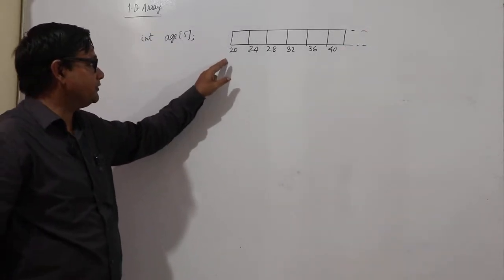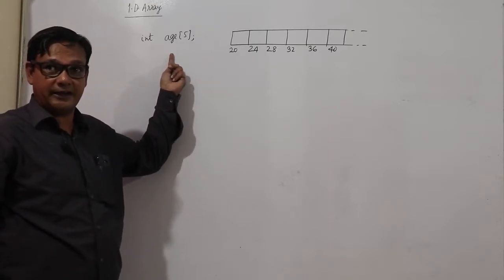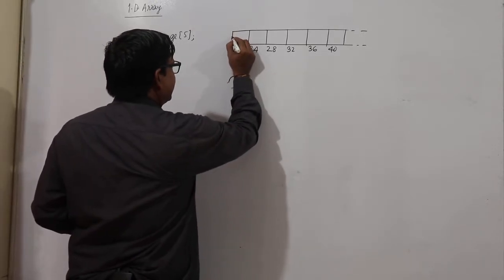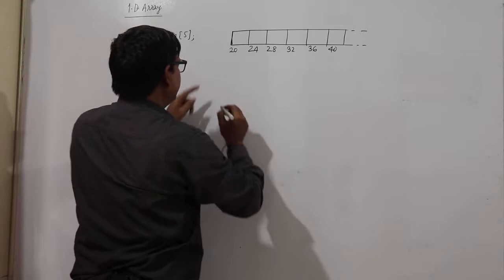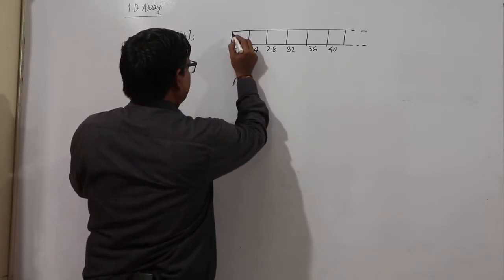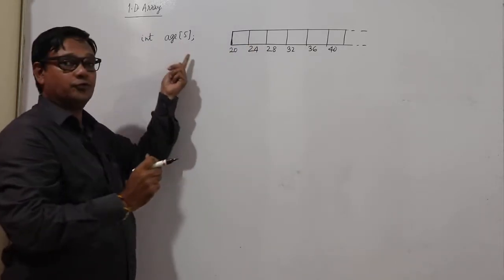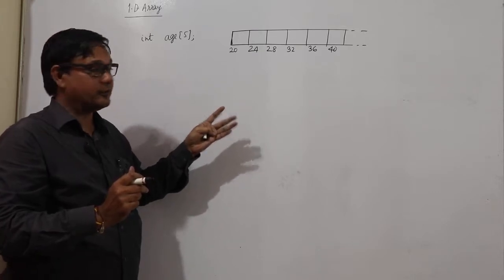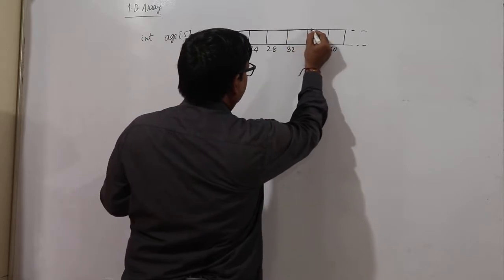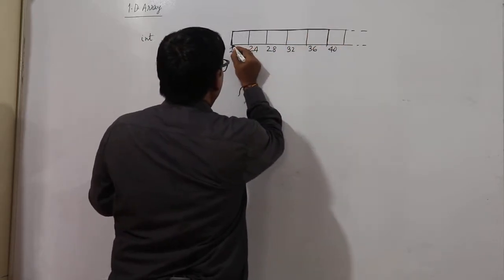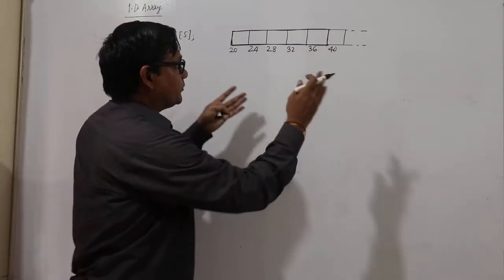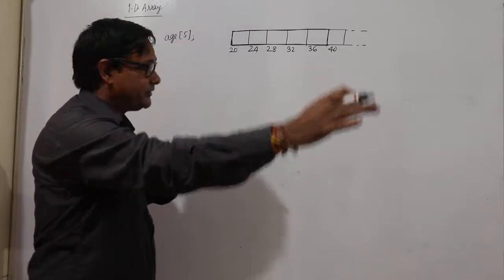If location of age, this is array for 5 elements. If the memory is allocated for age from 20, then 20 plus 5 into 4, 20 plus 20. It will be up to 40. 40 means it will be up to 40. Some other location will be starting with 40.